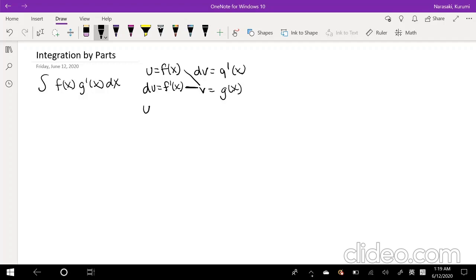So the idea is this: you want to find u v minus the integration of v du. Or in our example, it's going to look like f of x g of x minus the integration of g of x f prime of x.